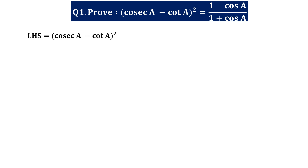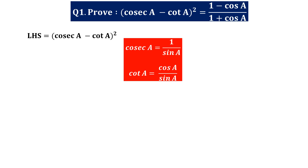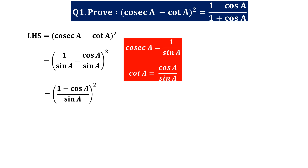The left hand side is (cosec a − cot a)². Cosec a is the reciprocal of sin a, and cot a = cos a/sin a. So we can write (1/sin a − cos a/sin a)², and since the denominators are the same, taking the LCM gives ((1 − cos a)/sin a)². Separating numerator and denominator gives (1 − cos a)² / sin²a.